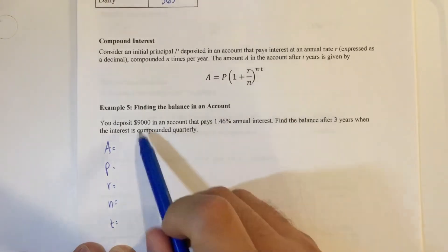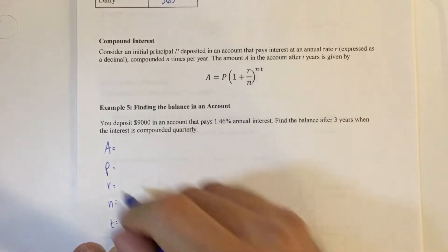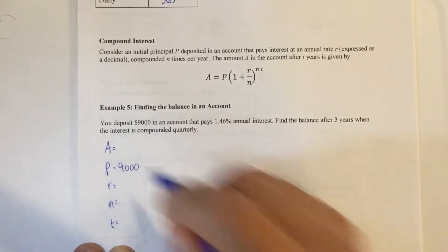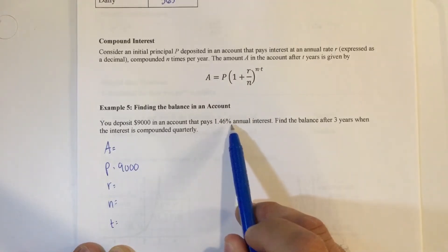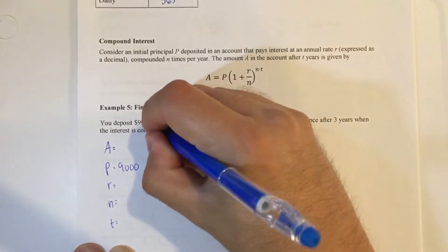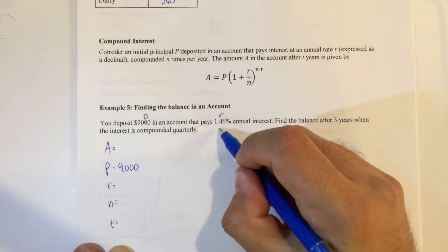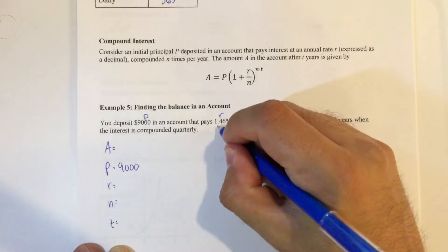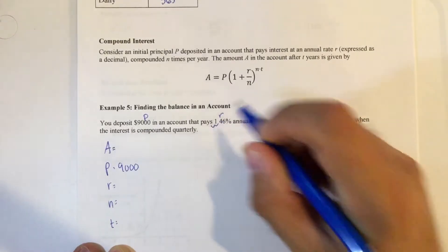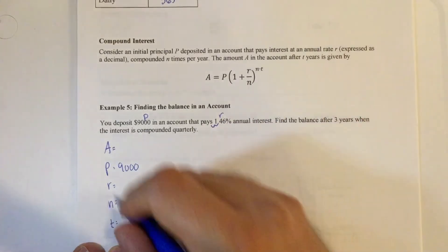I'm depositing $9,000 is my initial principal that pays 1.46%. So that's my rate, but the rate has to be expressed as a decimal. What we do is we move this decimal two to the left, so it becomes 0.0146.